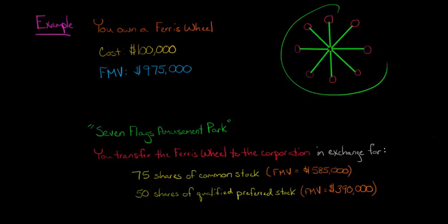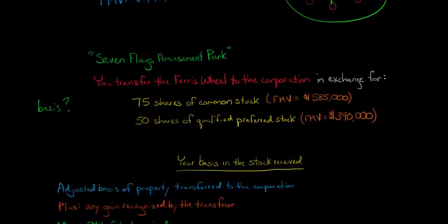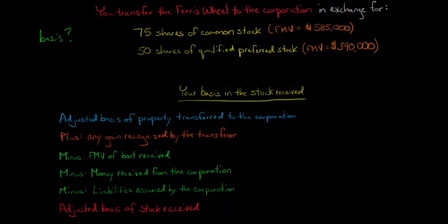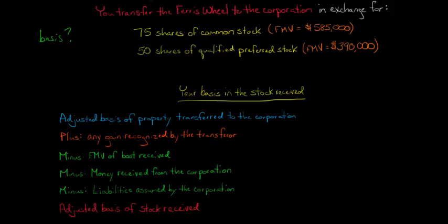Now the question is: you're giving the Ferris wheel to the corporation and getting two classes of stock in exchange, but we need to know the basis for each class of stock, because you might decide to sell the common stock or the preferred stock or both. If you sell just one class, you're going to need to know the basis that applies to that class, not just the combined basis. Your basis in the stock received — and this is a long formula, but it'll be helpful — is the adjusted basis of the property you transfer to the corporation, which is the Ferris wheel. In this example, the adjusted basis of the Ferris wheel was $100,000.